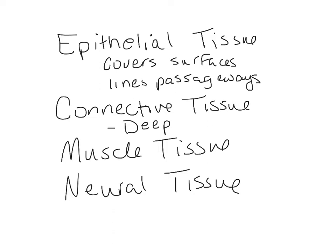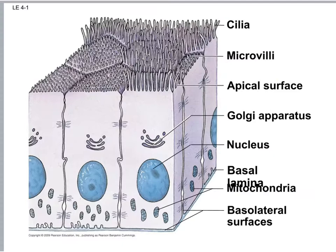Right now we're going to focus on epithelial tissue and go over some characteristics that all epithelial tissue has. The first is cellularity — the cells are very close together, tightly connected, forming close connections with each other. They have to be tightly packed because they form a lining that doesn't let a lot of things through.